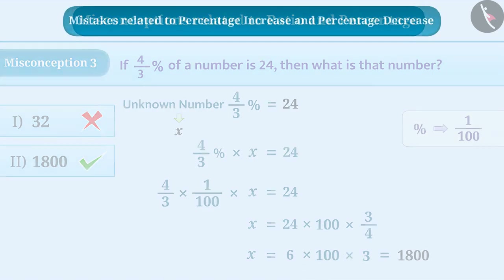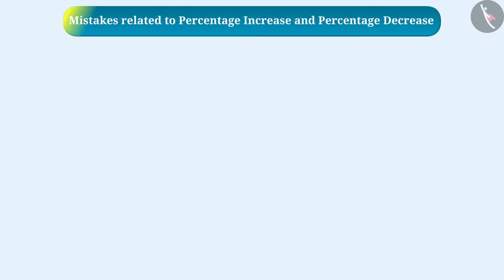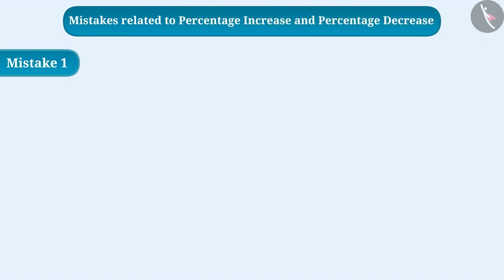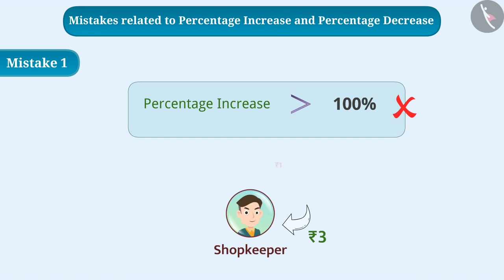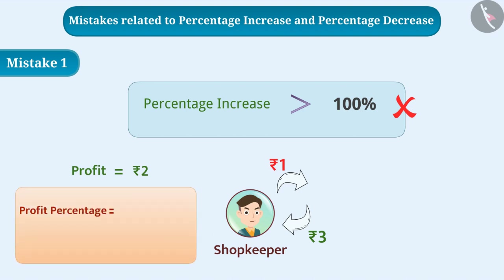Now let's look at some mistakes related to percentage increase and decrease. Mistake 1: Some children think that percentage increase can never exceed 100 percent, but this is wrong. Suppose a shopkeeper spends 1 rupee and gets 3 rupees back. His profit is 2 rupees, and the profit percentage is (2 ÷ 1) × 100 = 200 percent.